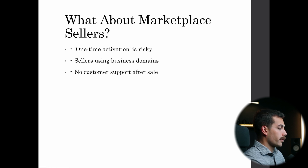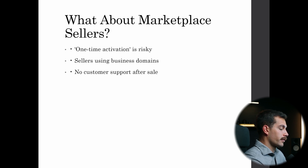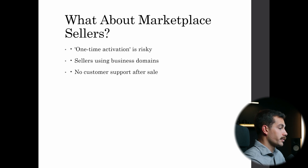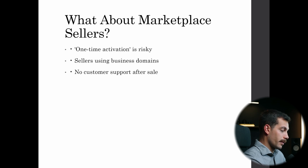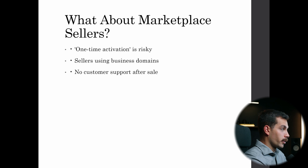What about marketplace sellers? Marketplaces like eBay and Amazon have tons of third-party sellers — some are legit, but most are not. There are red flag phrases to look out for, like "one-time activation" or "key delivered via email." That can mean you're getting a recycled corporate or academic license that can be deactivated at any time, and once it stops working, there may not be real support to fall back on.